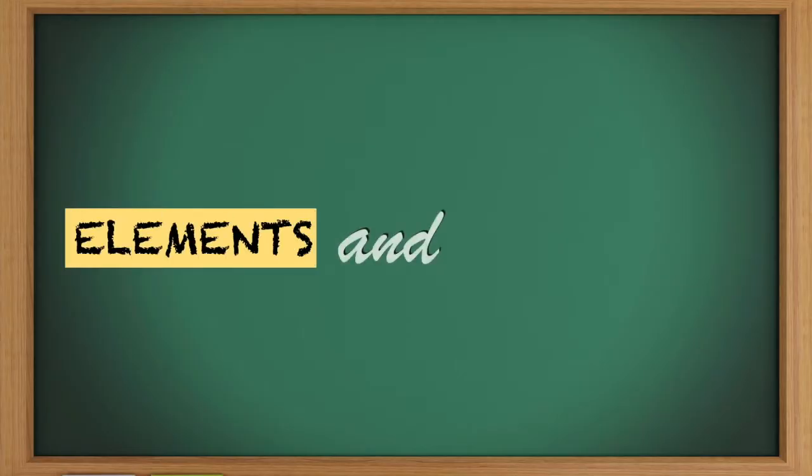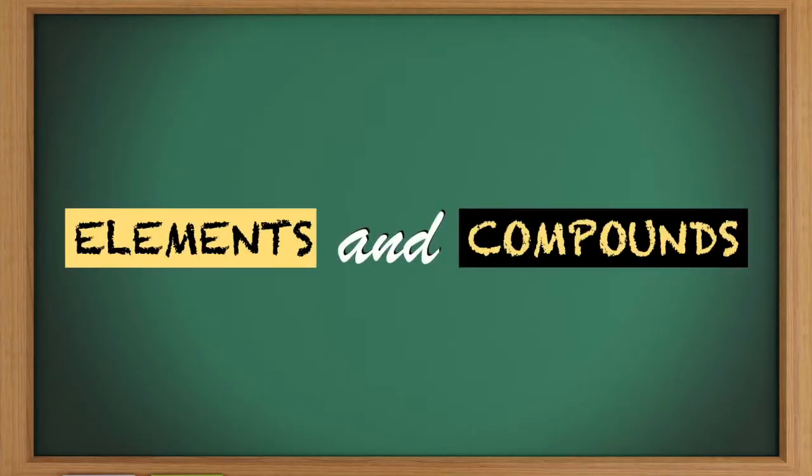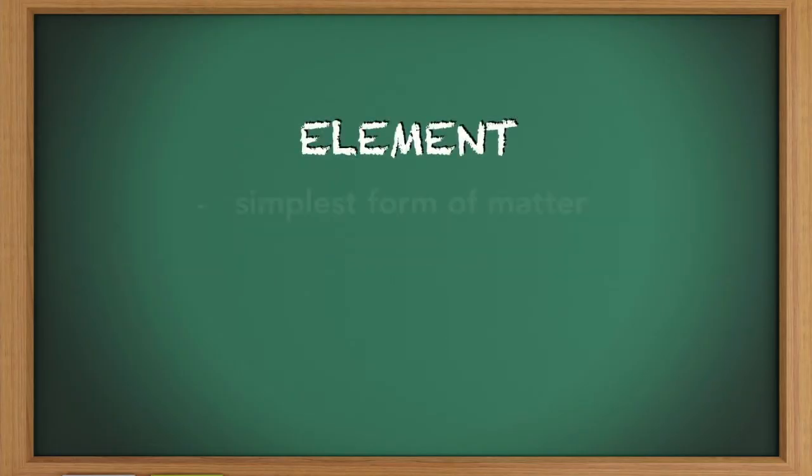So let's answer this question by spelling out the difference between elements and compounds. An element is the simplest form of matter that consists of a single type of atom. By simplest, we mean it cannot be broken down into simpler forms without losing its properties.